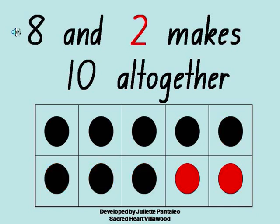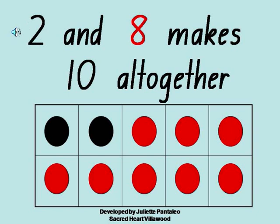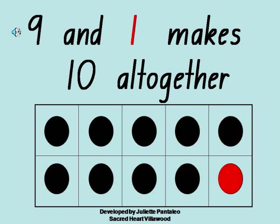8 and 2 makes 10 altogether. 2 and 8 makes 10 altogether. 9 and 1 makes 10 altogether.